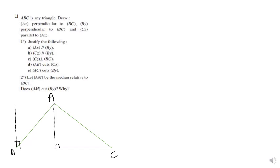Now we need to draw CZ which is parallel to AX. So we have BY and AX, and we need to draw a line parallel to AX passing through C. This is CZ. Of course you're going to draw it better than me. So here we have CZ parallel to AX.